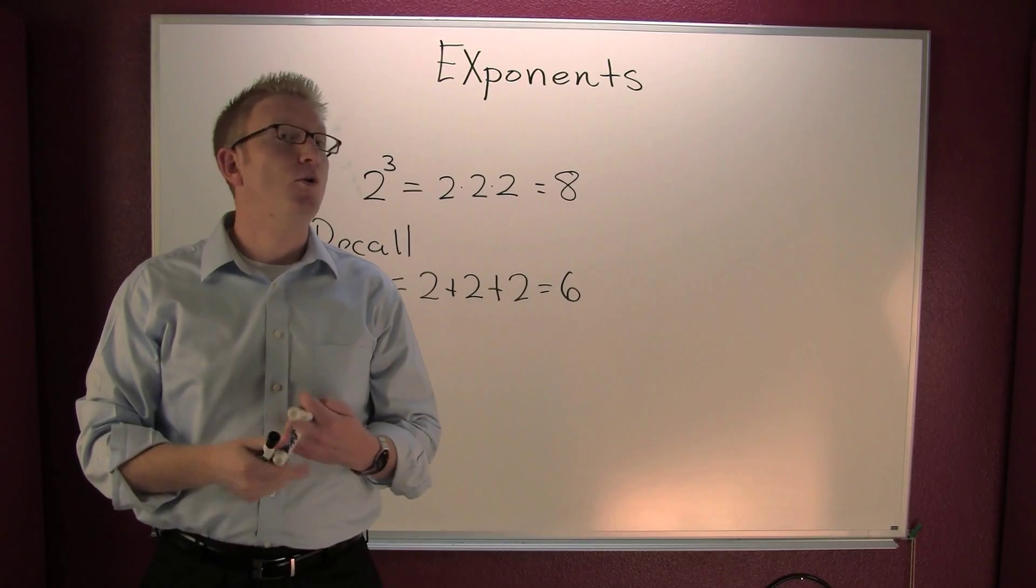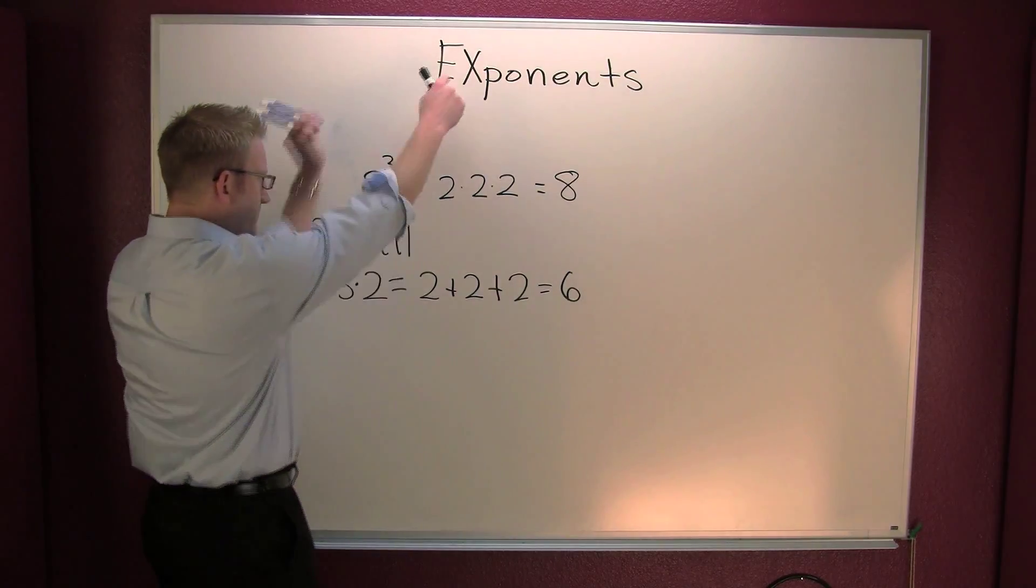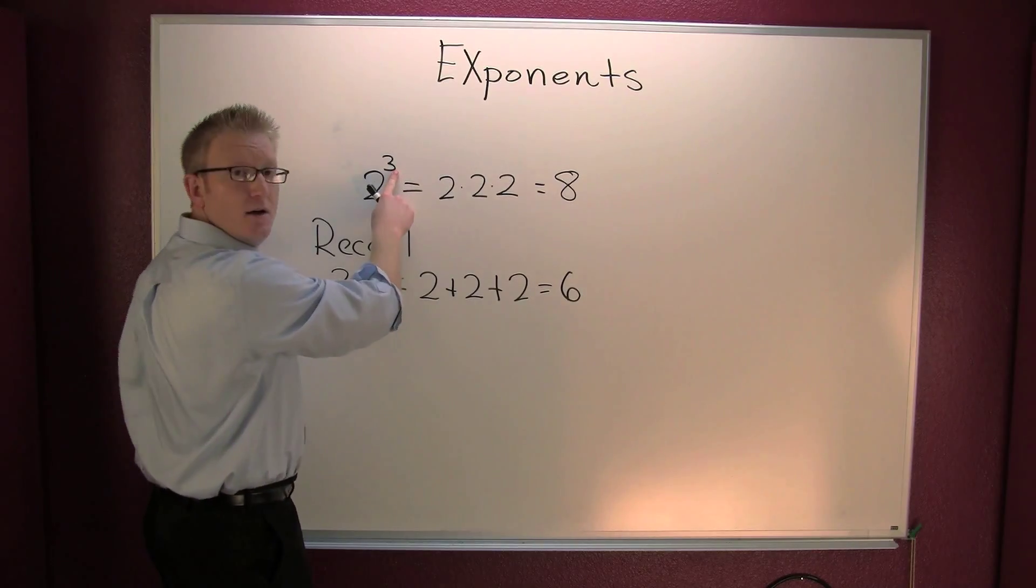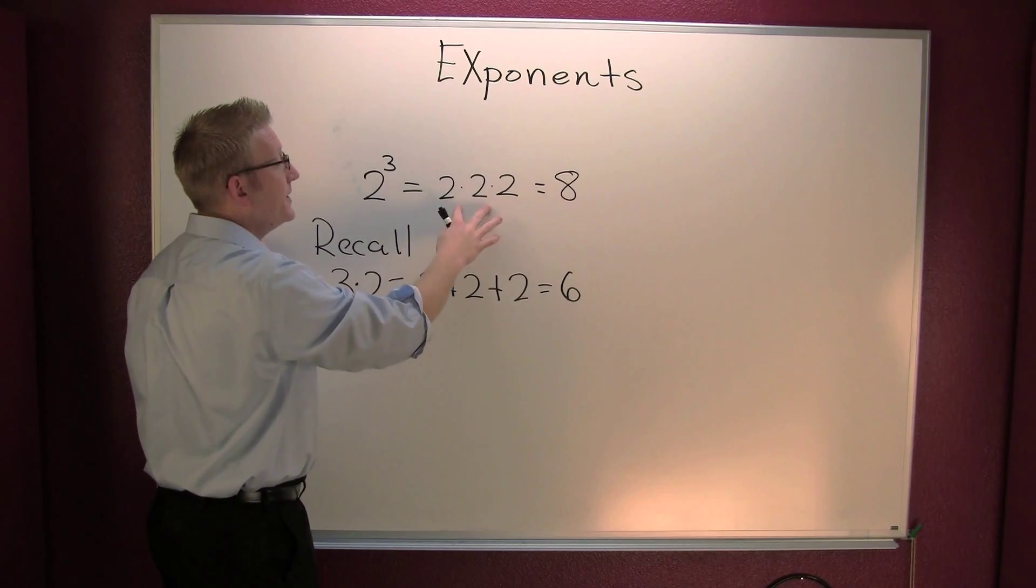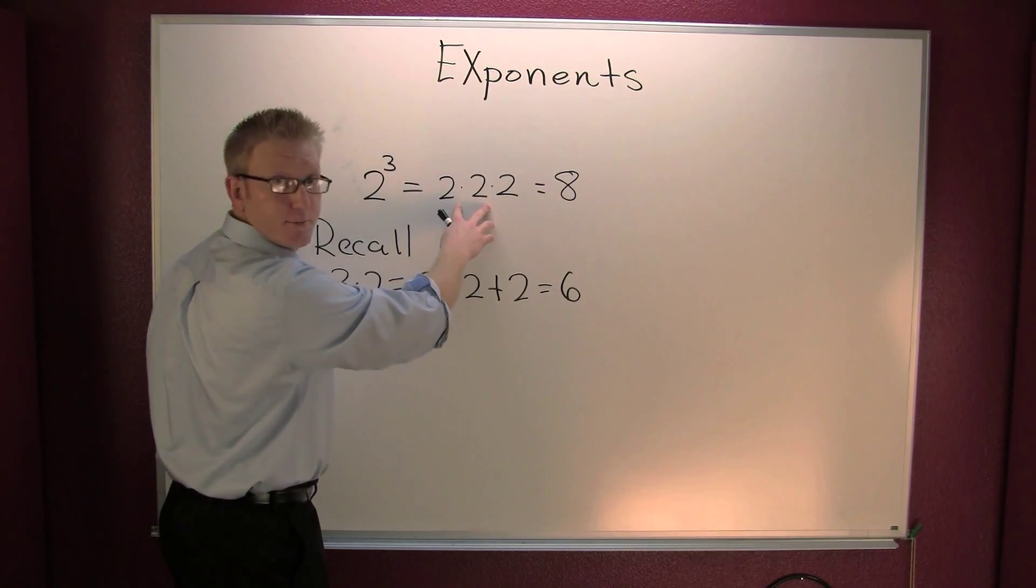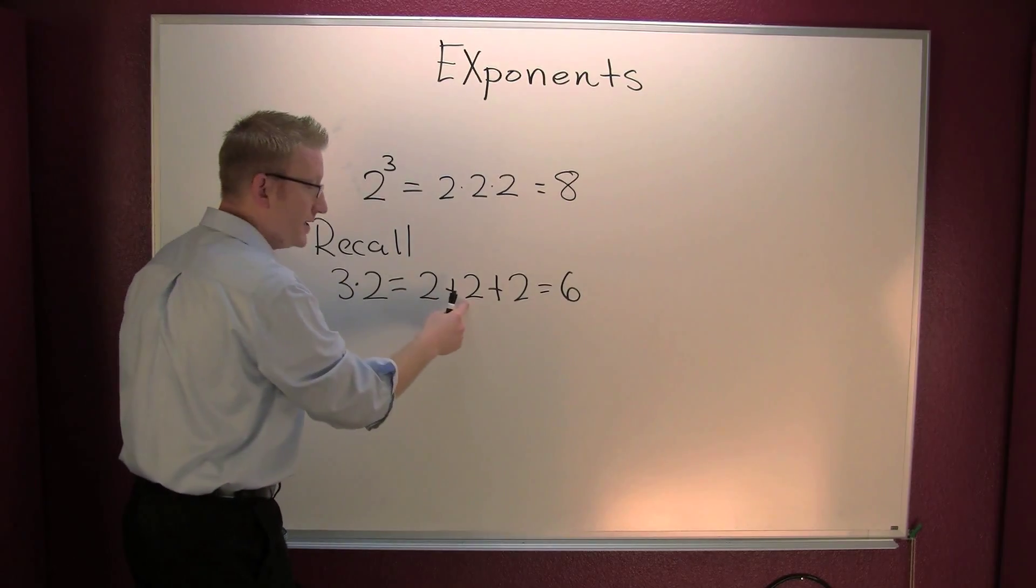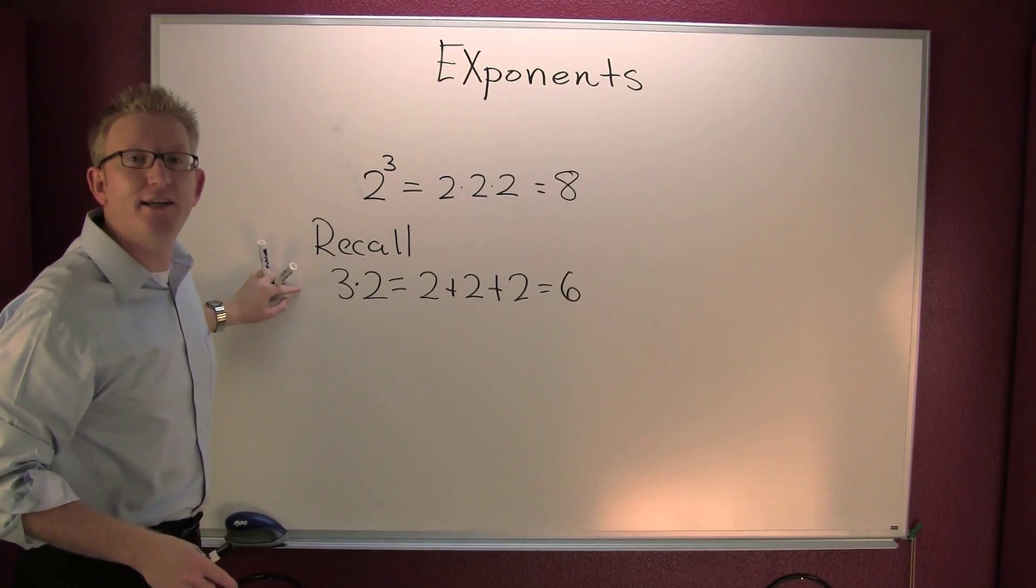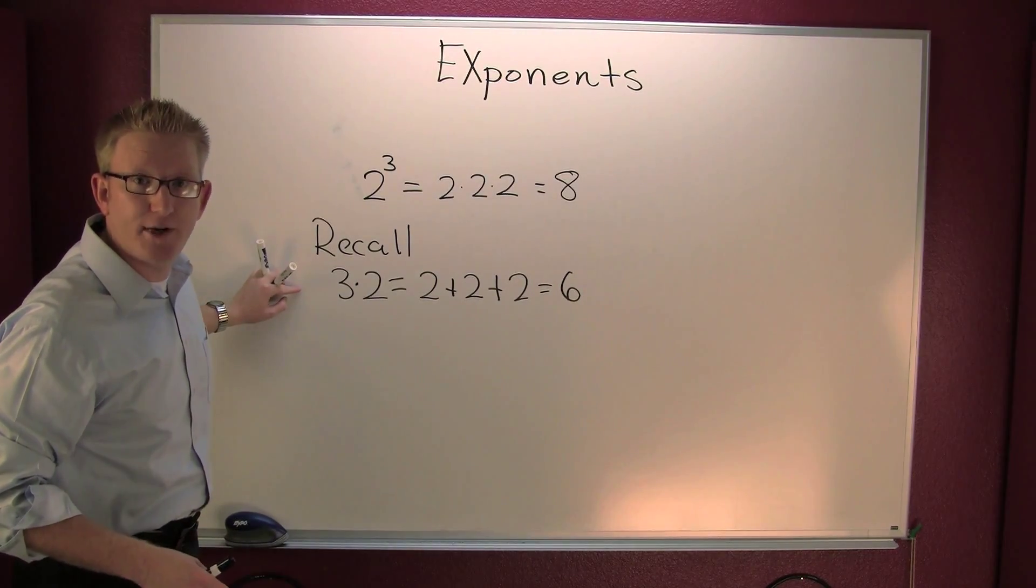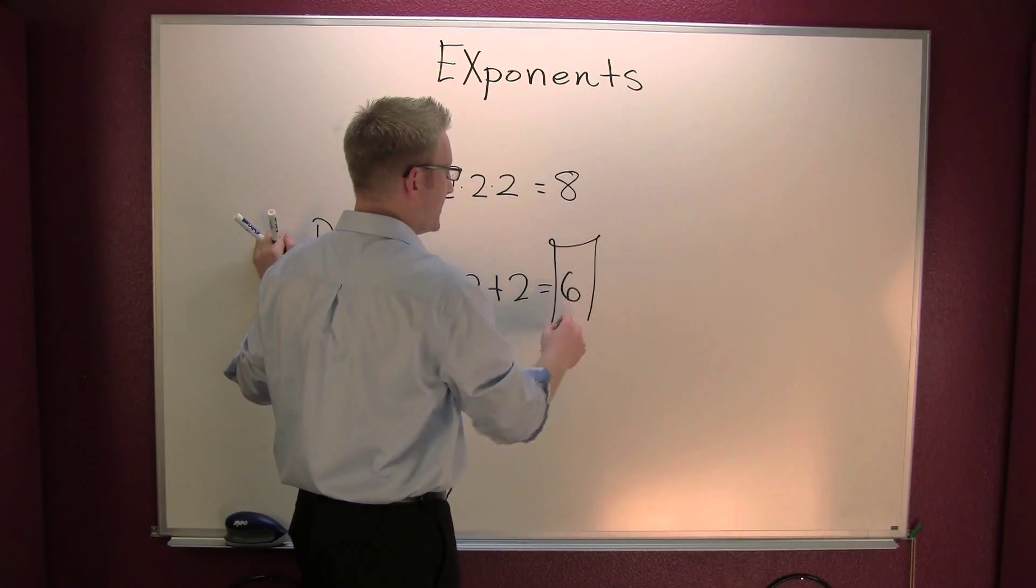Pay attention to what you're multiplying or what you're adding. If the number is up here as a superscript on the right-hand side, this is an exponent—that's repeated multiplication. If the number's written in front, that's repeated addition. And like Offspring says, you gotta keep it separated.